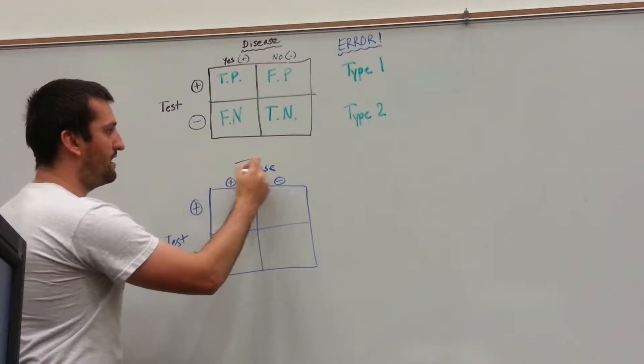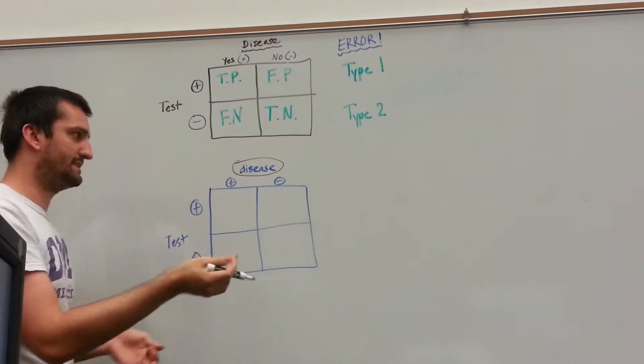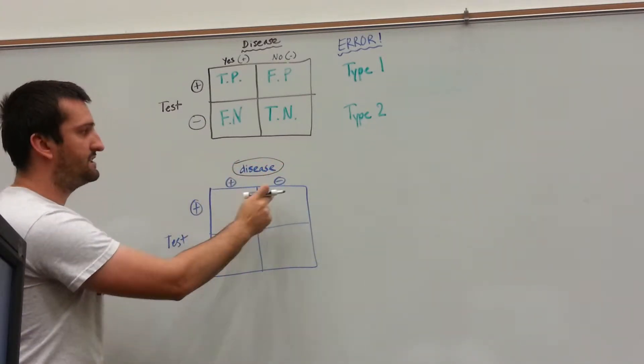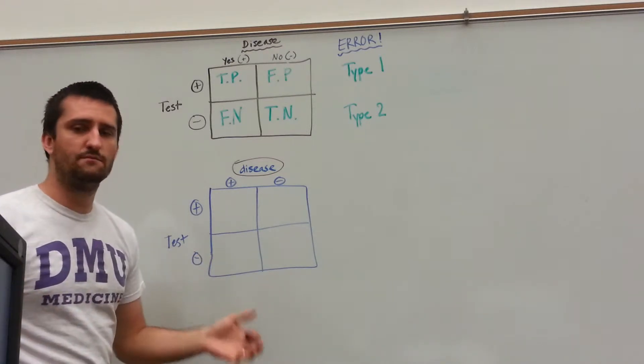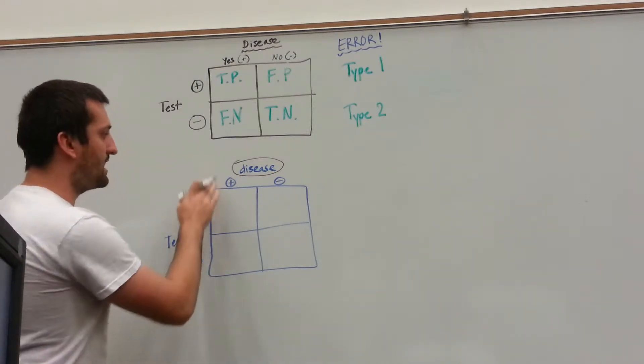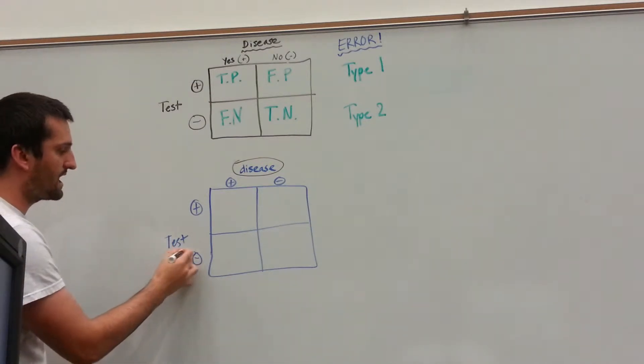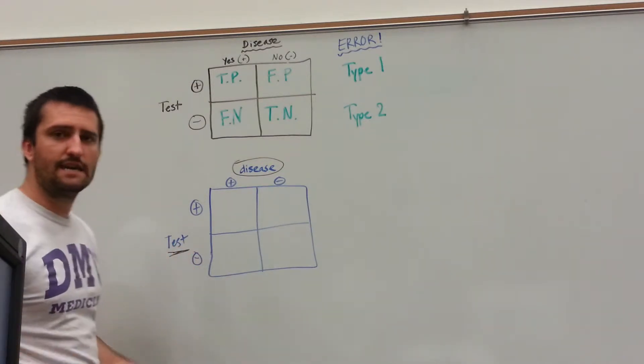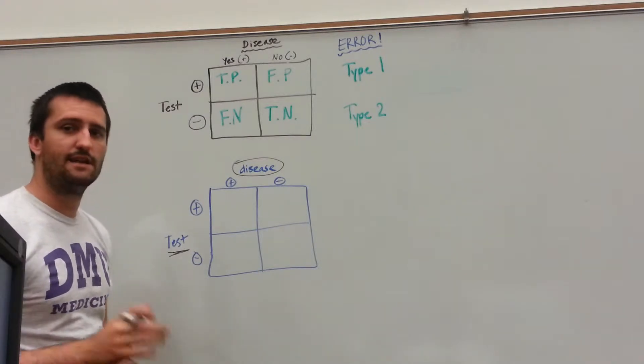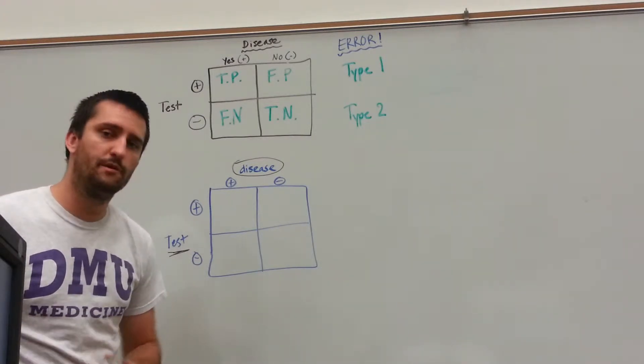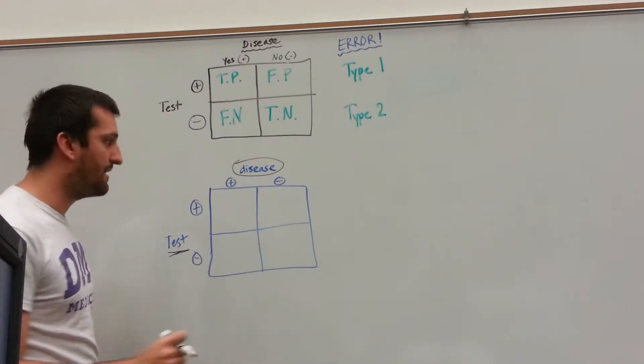So here we have on the top, we show the disease. So we either have the disease or you don't. So let's choose a random disease like diabetes. We either have diabetes or you don't have diabetes. Now, we also came up with a test. Let's say it's a blood sugar test to test blood sugar levels to determine whether or not a patient may or may not have diabetes.